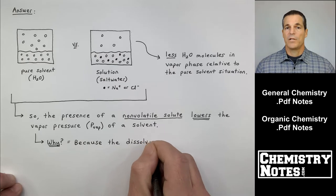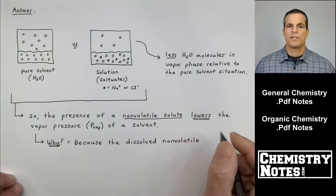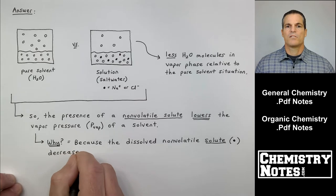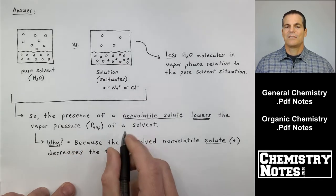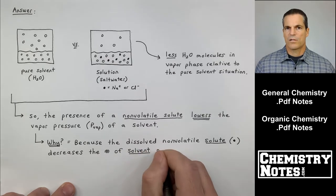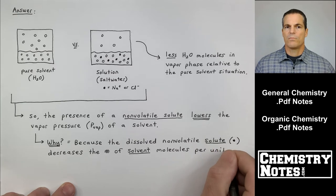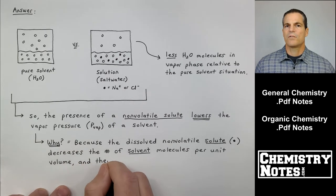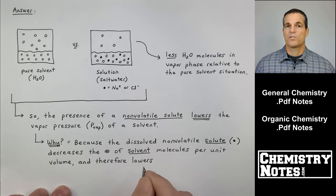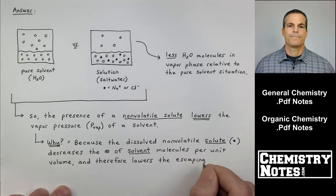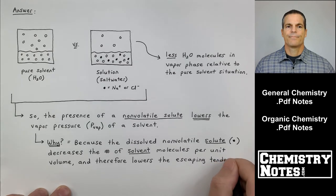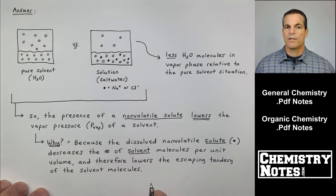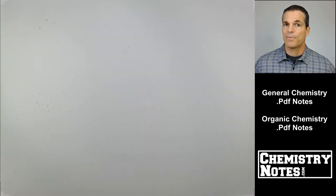Why is this? Well, I'm going to read along with what's written here. It says, because the dissolved non-volatile solute, which remember I represent with a little black dot, the dissolved non-volatile solute decreases the number of solvent molecules per unit volume. And if the number of solvent molecules per unit volume is decreased, we're also decreasing the tendency for those solvent molecules to escape from the surface of the liquid. So I'm finishing writing down what I just said out loud. Number of solvent molecules per unit volume goes down. Therefore, their tendency to escape per unit volume goes down.